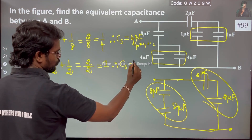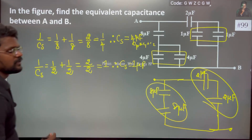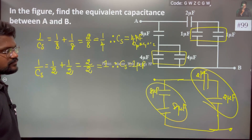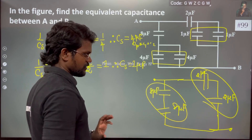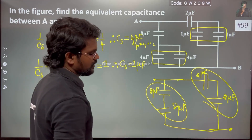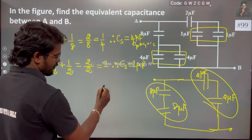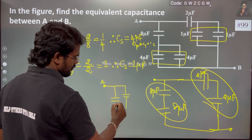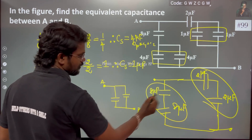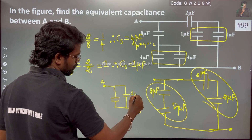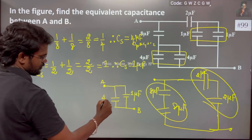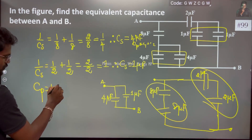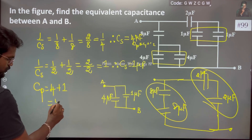We also have a 1 microfarad capacitor. So we have a series combination of 4 microfarad, and then a parallel combination with the 1 microfarad capacitor.